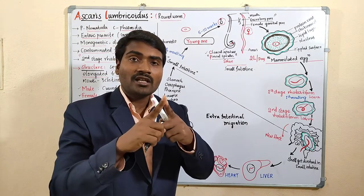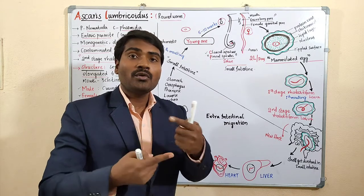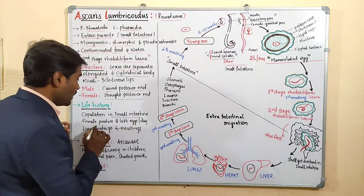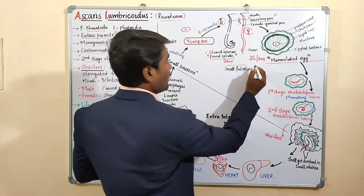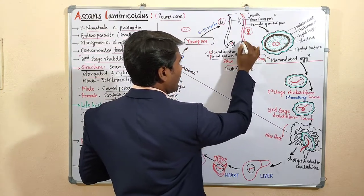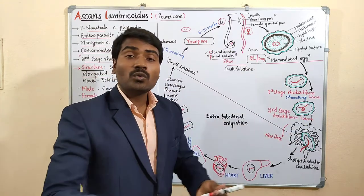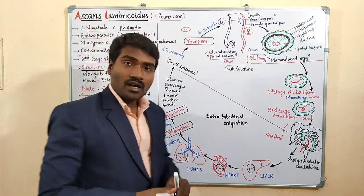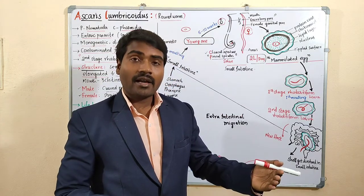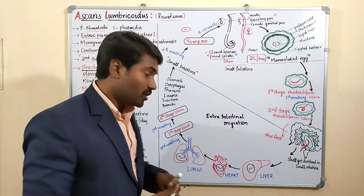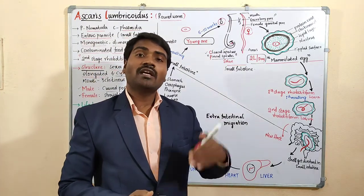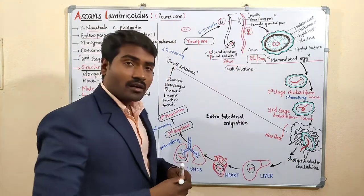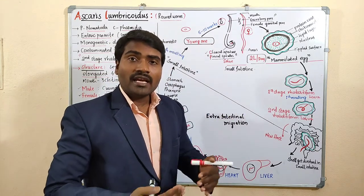In the small intestine, the adult male and female worms meet and copulate. After copulation, the female produces 2 lakh eggs per day. This number is important. These eggs undergo changes and give rise to rhabditiform larvae, which undergo 4 moltings. Some or all of the eggs are released out of the body.